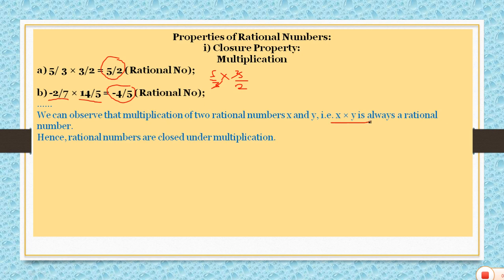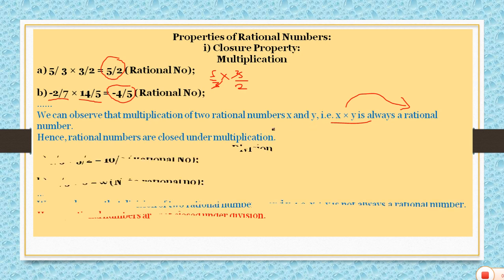So rational numbers follow closure property under multiplication. x multiplied by y is always a rational number.